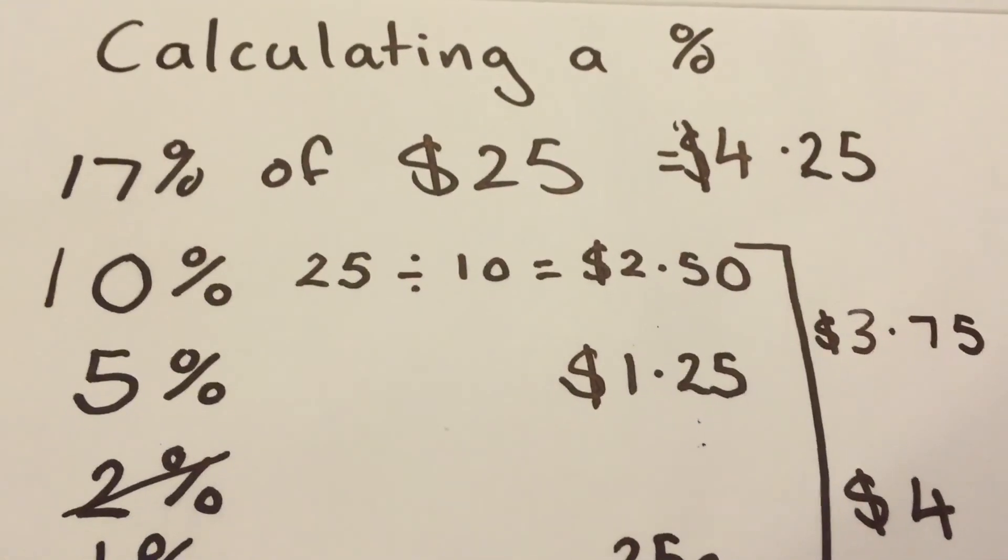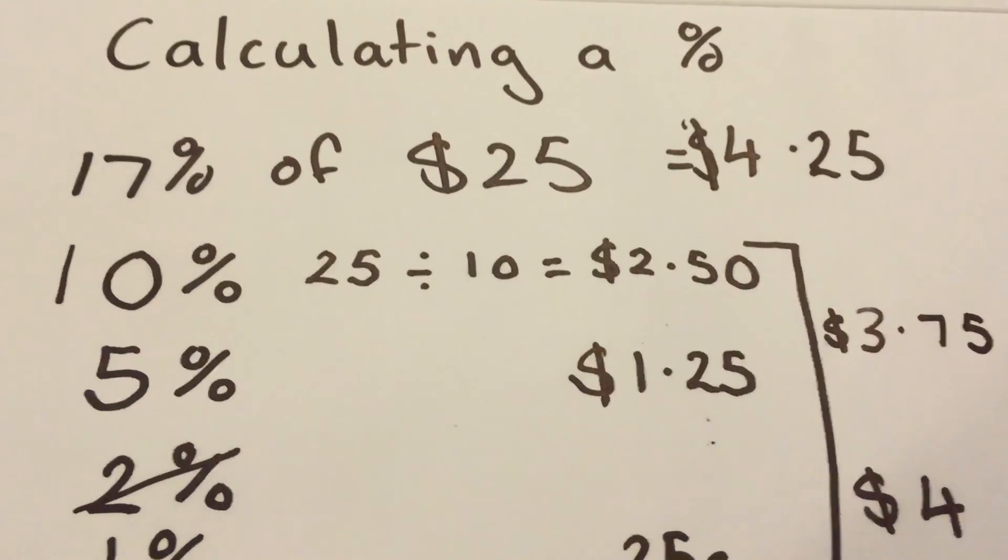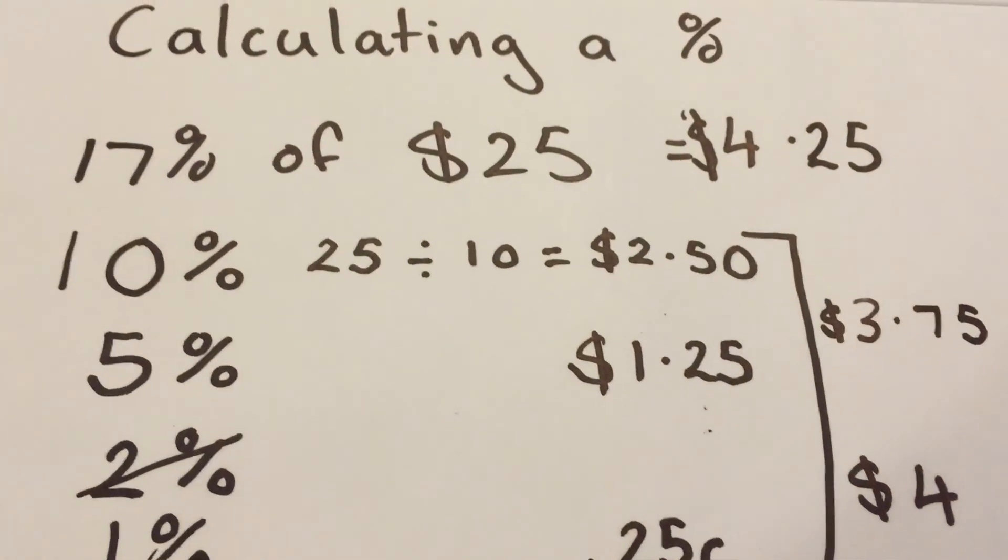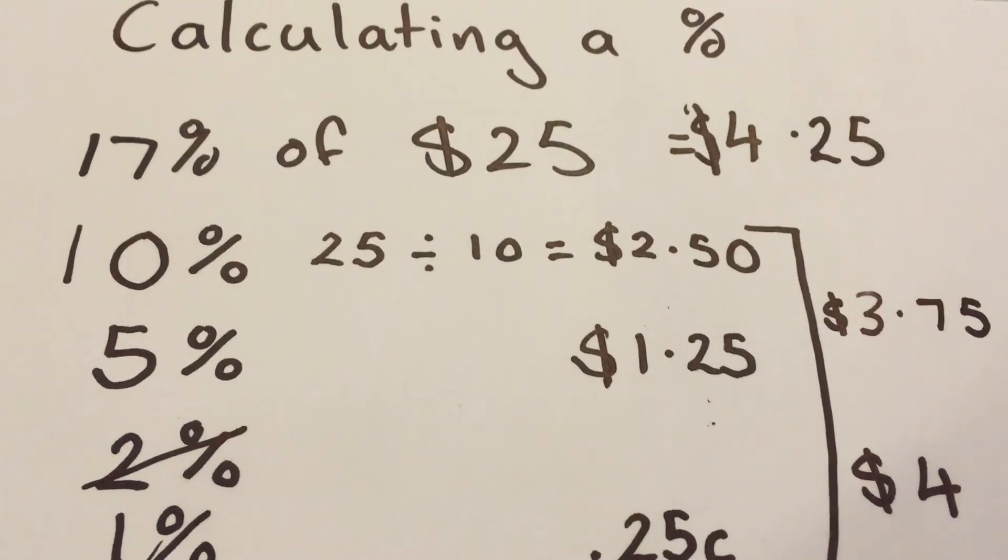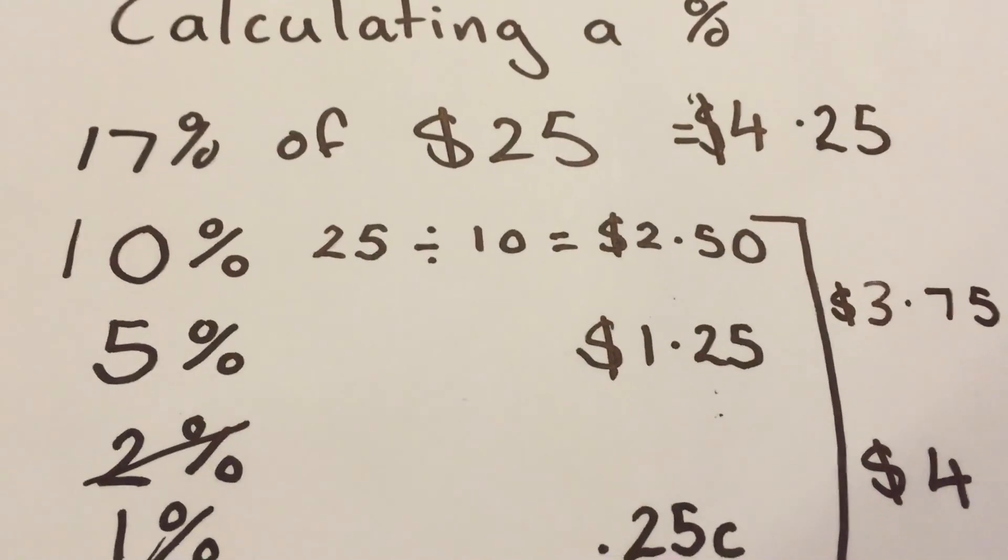And that's all you need to do for any percentage to figure it out. Split it up into your 10%, your 5% and your 1%. Add it all together at the end. And that's it. Thank you.